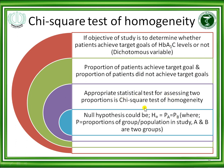The appropriate statistical test for assessing two proportions is the chi-squared test of homogeneity, used when testing for significance between proportions. The null hypothesis is H₀: PA = PB, where PA is the proportion of patients achieving the HbA1c target in Group A and PB is the proportion in Group B. The null hypothesis states that both proportions are equal, while the alternate hypothesis states they are not equal.